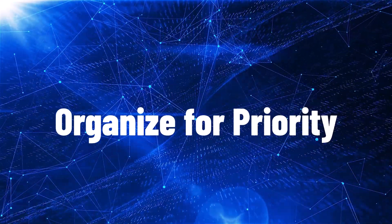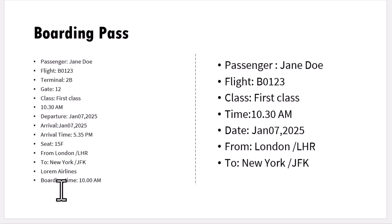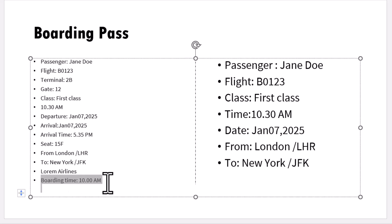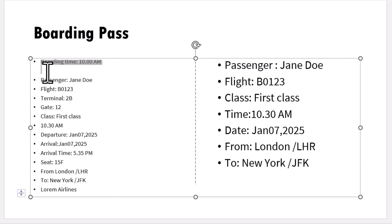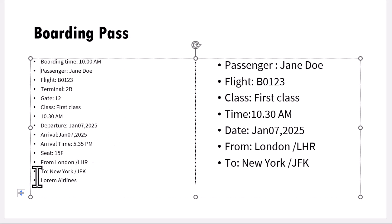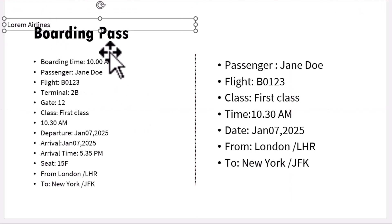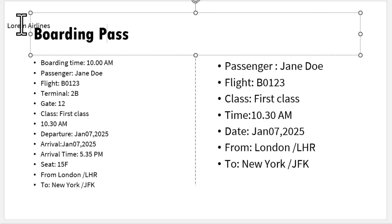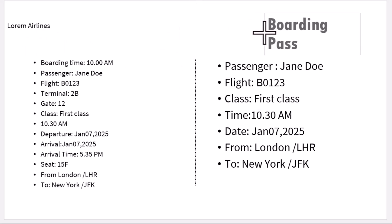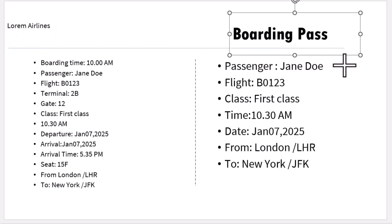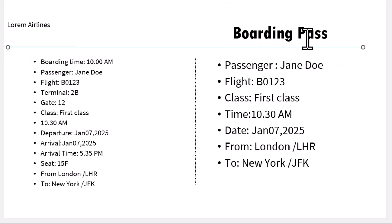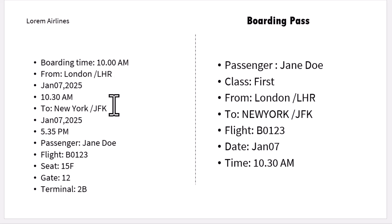The next step is to organize for priority. If you see the list of points here, there are certain pieces of information that are very important and they need to be right up front — like, for example, the boarding time. This is one of the most important details that we need to have on the boarding pass. Then, I don't necessarily need to have 'Lorem Airlines' as one of the points here. This actually should be in the title because this is not information for the passenger — it is just for branding. And I can keep this to one side and clearly demarcate the information for the passengers from the branding elements and the title, so people know where to focus. Once I reorganize based on priority, this is how the information looks.